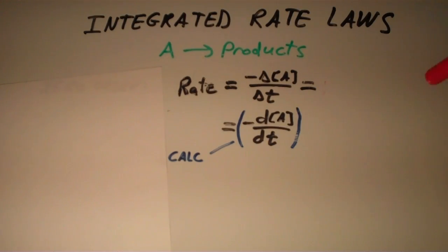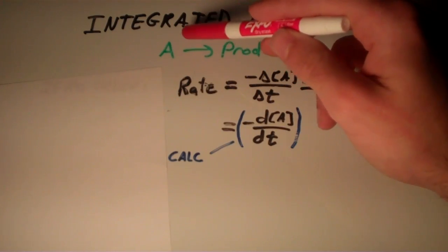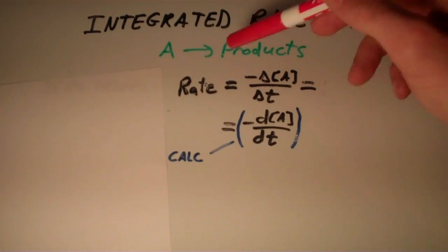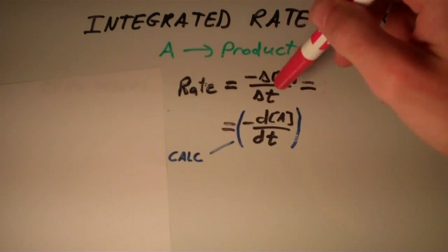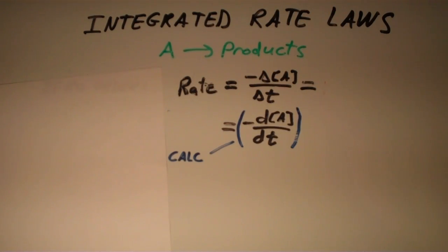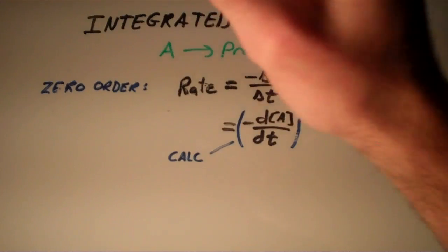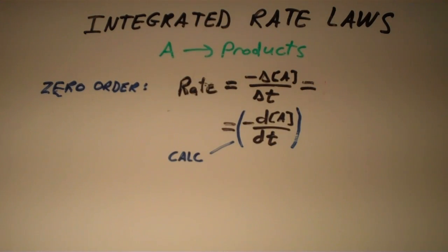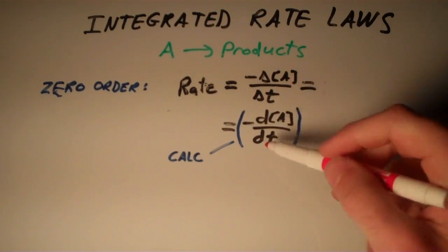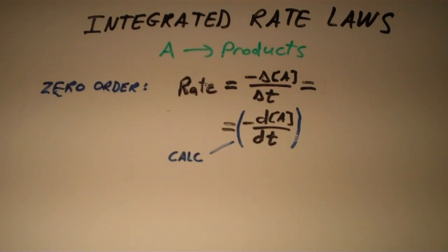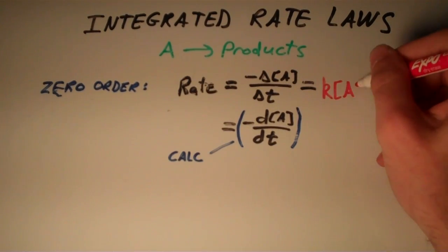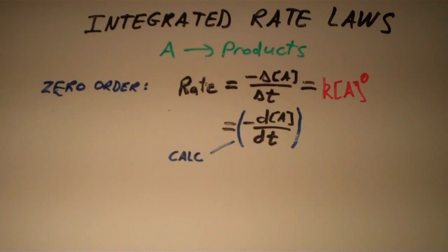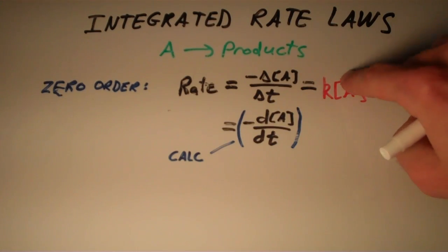Regardless of the order of the reaction — whether it's first order, zero order, second order, or whatever — the rate is always equal to these things. Now let's suppose we have a zero order reaction. For a zero order reaction, the rate is equal to K times the concentration of A to the zero power. Since anything to the zero power is one, this is just equal to K.